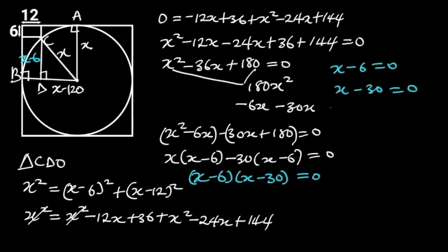If X minus 6 equals 0, then X equals 6. Since the radius of the circle must be greater than 6 units, the radius of the circle is equal to 30 units.